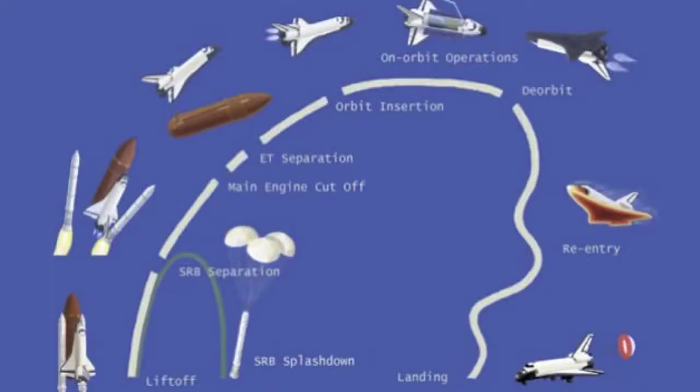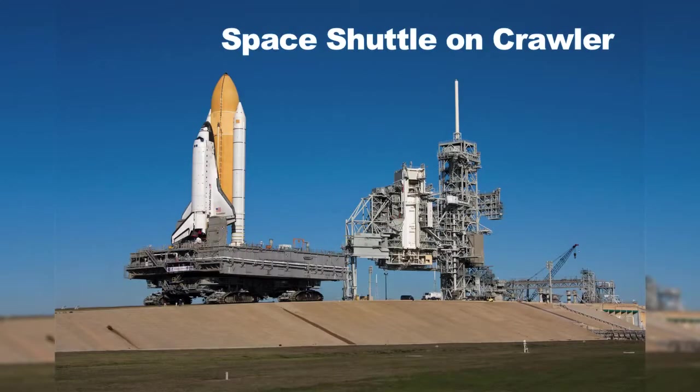Looking at the Space Shuttle example — with its external tank and two solid rocket motors — it goes through different phases of operations. Even before reaching the launch pad, it must go through ground processing: cleaning, inspection, rebuilding parts, and preparation. For a reusable mission like the shuttle, the concept of operations reaches all the way back to that ground processing phase — including how to move it to the pad using the large crawler.